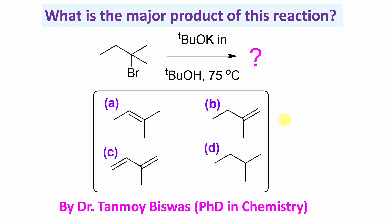Now the question: what is the major product of this reaction? What is this reaction? This is actually an alkyl bromide and here the reagent is potassium tertiary butoxide in butanol. What is the product? From the options, it's a little confusing. But remember, potassium tertiary butoxide is actually a strong base and it is taken in tertiary butanol which is acting as a solvent.